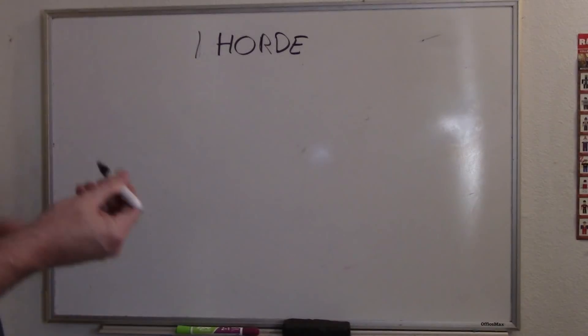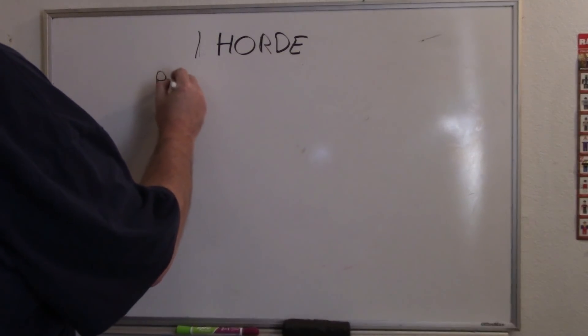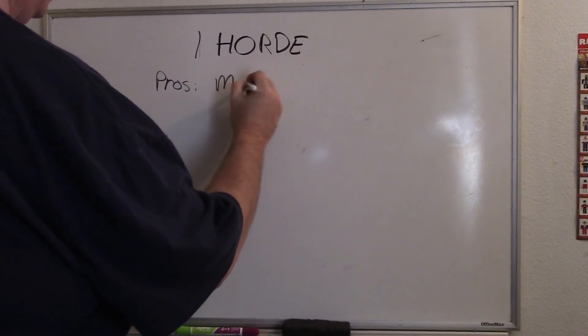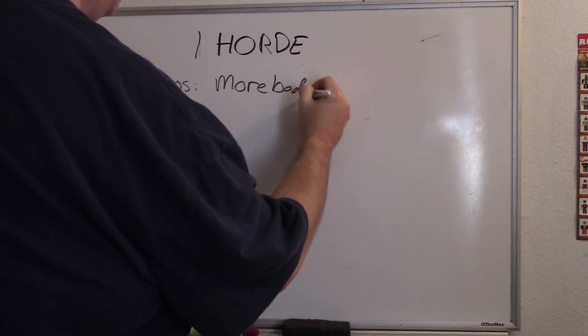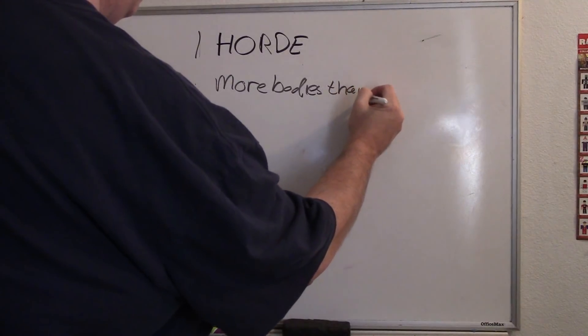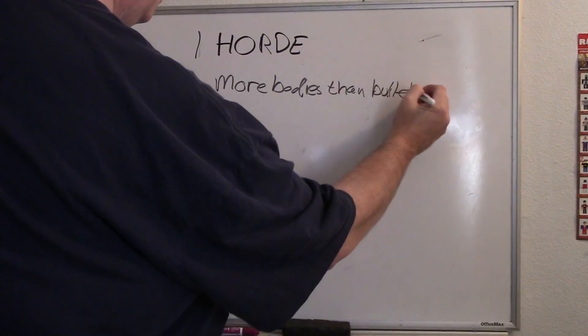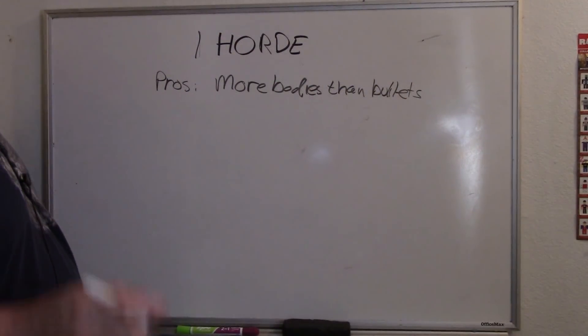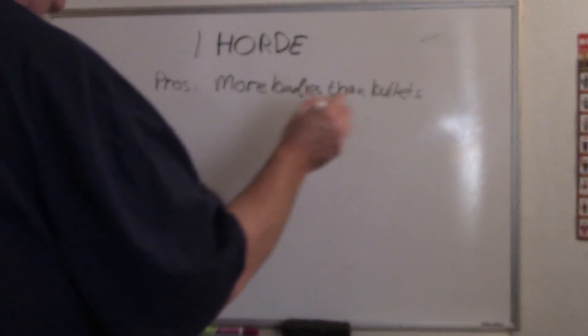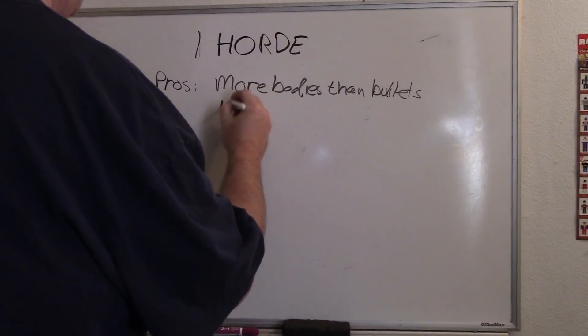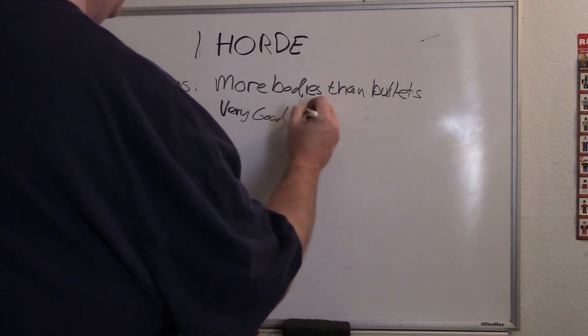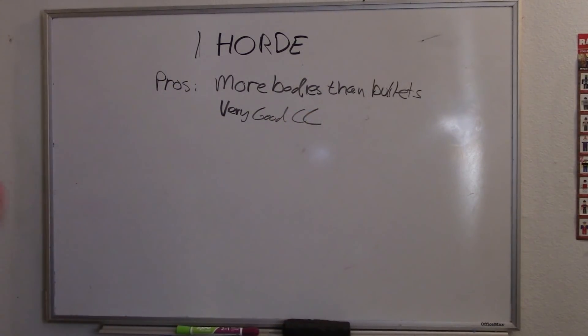So horde green tide. Pros of the green tide: more bodies than bullets. That is your primary goal, more bodies and bullets. You want to make sure you can get across the board with sufficient force remaining to take down your targets in close combat. Very good close combat, just a massive number of attacks, especially with the current index where everything is strength four to start with.